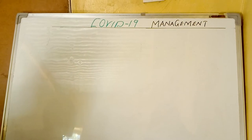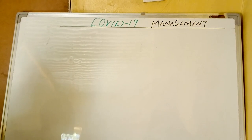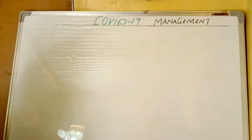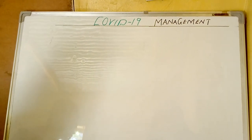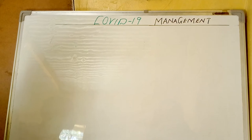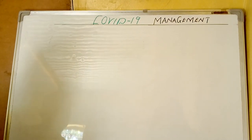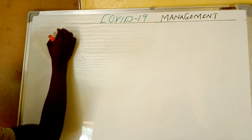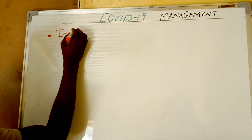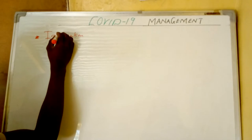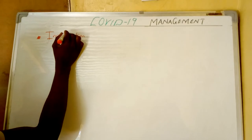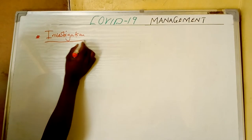Sometimes patients can present with signs and symptoms of flu, and mistakenly doctors start treating them for coronavirus. So we need to carry out some investigations which will confirm that the patient has coronavirus. The first heading we are going to look at is the investigations — what are the investigations that are going to confirm that this is really a coronavirus infection.